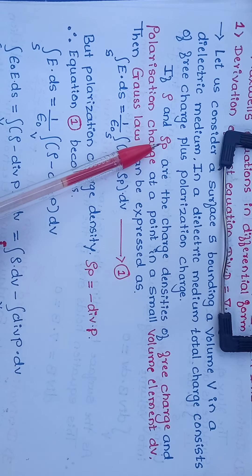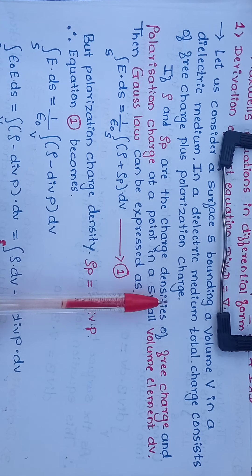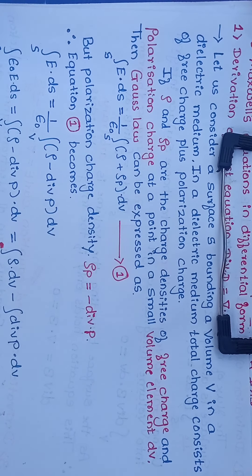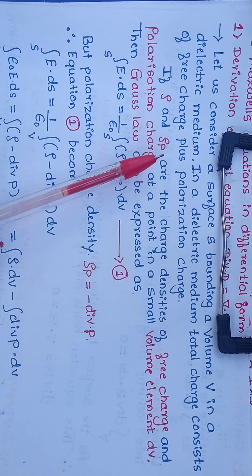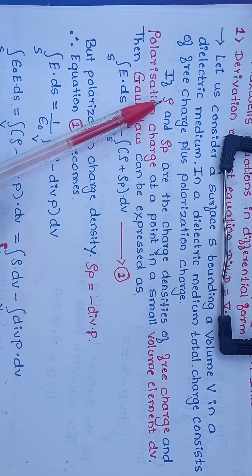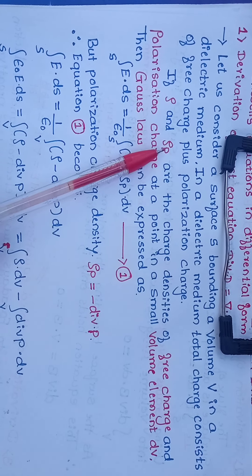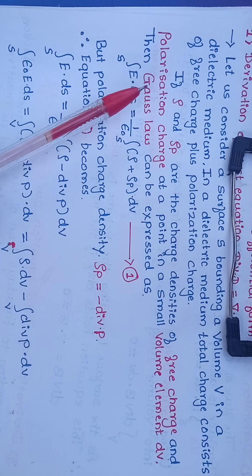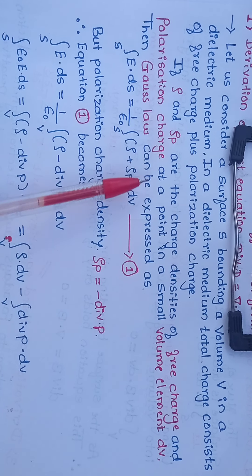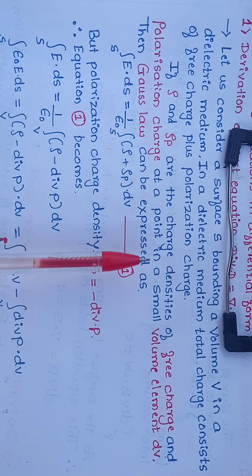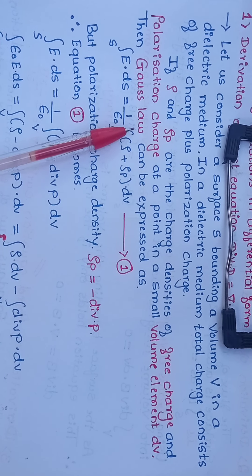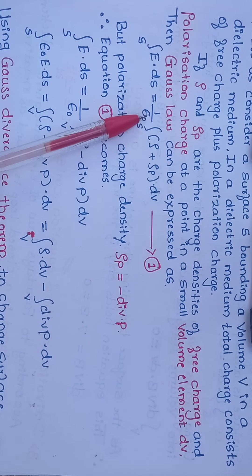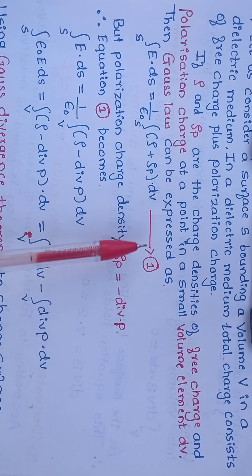If ρ and ρ_p are the densities of the free charge and polarization charge at a point in a small volume element dv, we apply Gauss's law. Gauss's law can be expressed as: surface integral of E dot dS equals (1/ε₀) times the volume integral of (ρ + ρ_p) dv. Call that equation number 1.